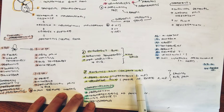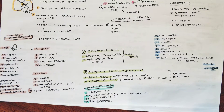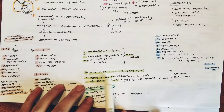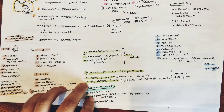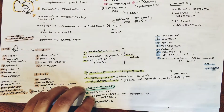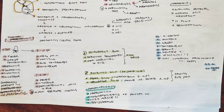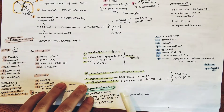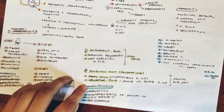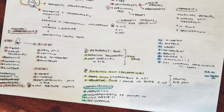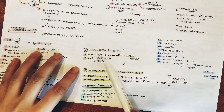The psoas sign is when you hyperextend the right hip and that causes right lower quadrant pain. It is more specifically used when you suspect a retrocecal appendix. The obturator sign involves passively rotating the right hip internally, which will also cause right lower quadrant pain. These indications are from USMLE recommendations and are less emphasized in local course notes.